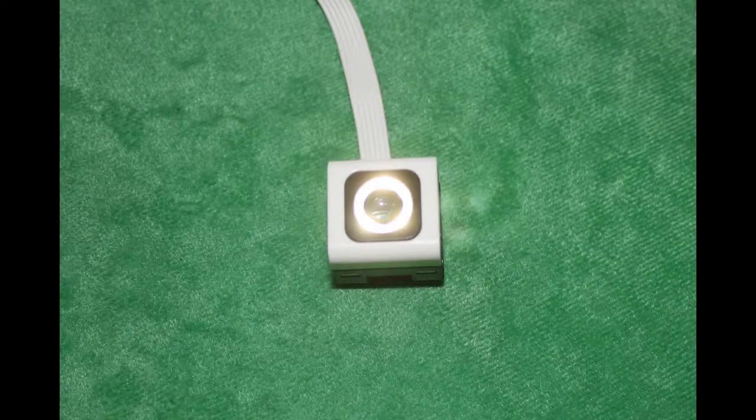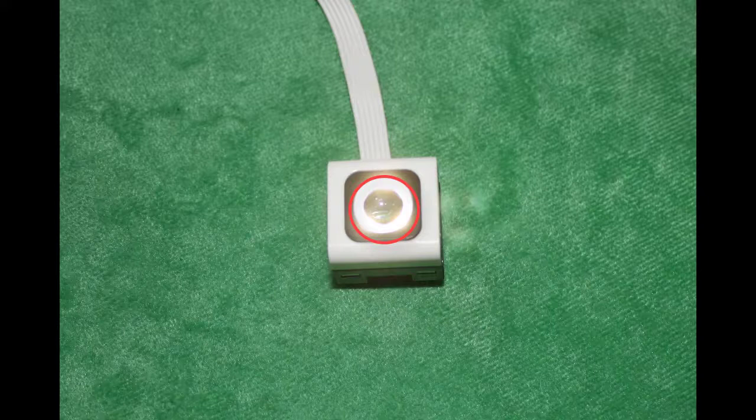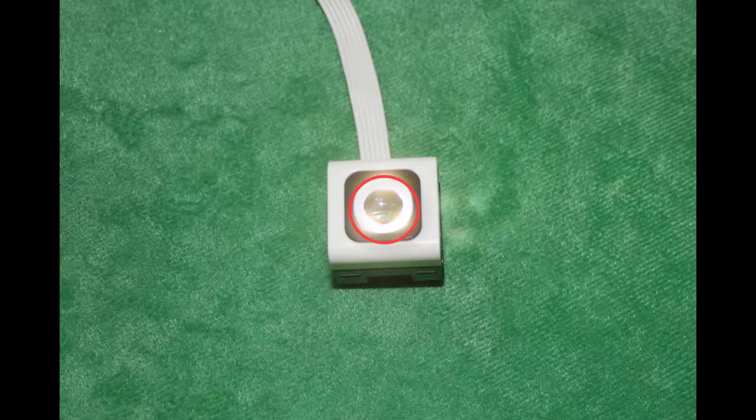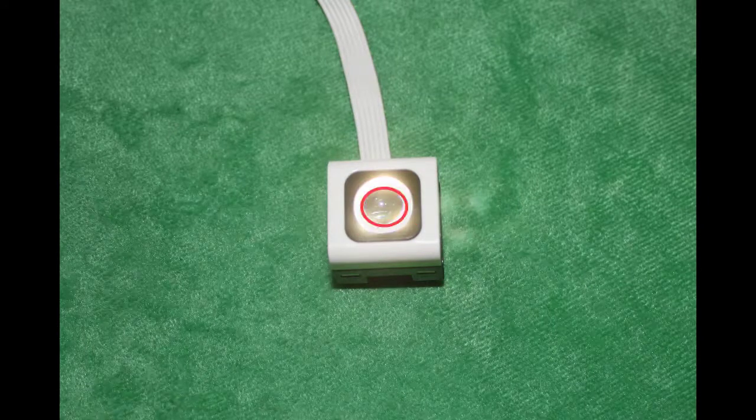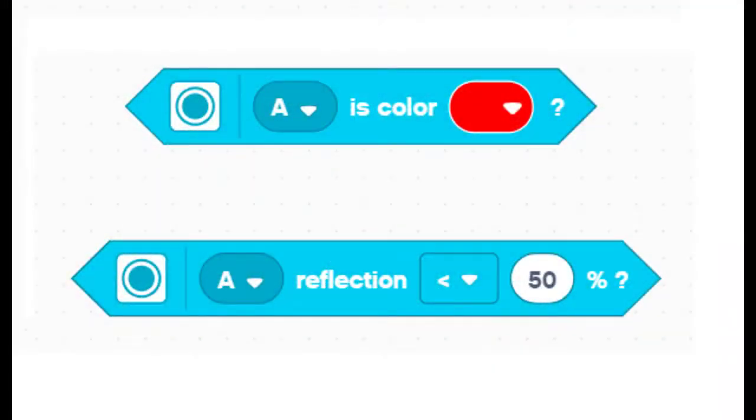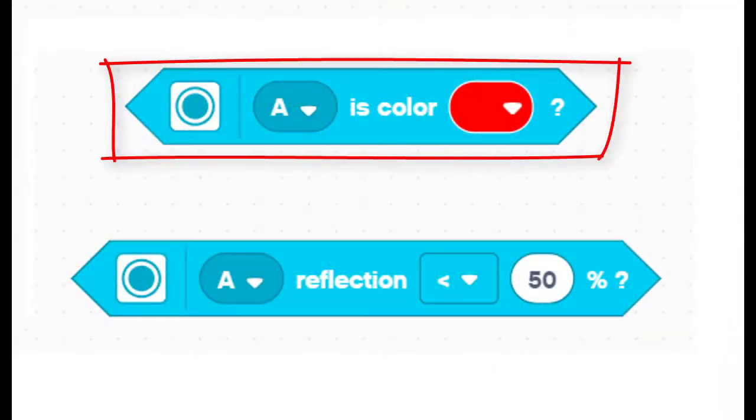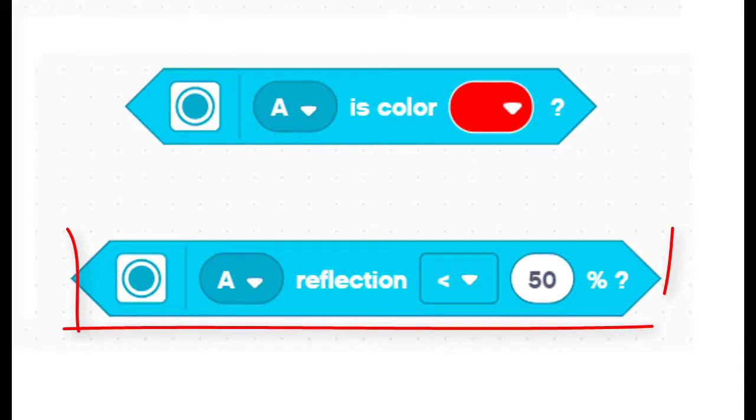The color sensor is actually a combination of a little light bulb called a light emitting diode or LED plus a sensor that measures the amount of light and the color of the light it receives. We can use programming blocks that either check for a particular color or measure how much of the LED's light is being reflected back to the sensor.